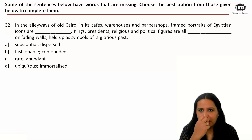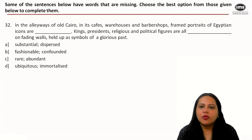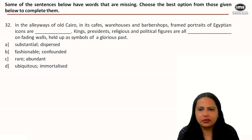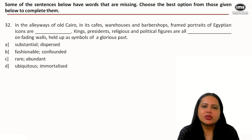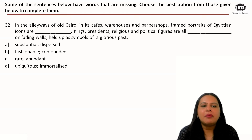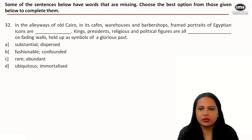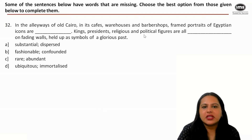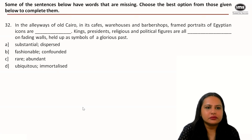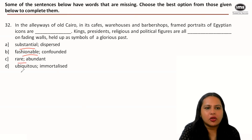Question four: 'In the alleyways of old Cairo, in its cafes, warehouses, and barbershops, framed portraits of Egyptian icons are dash — kings, presidents, religious and political figures are all painted on fading walls, held up as symbols of a glorious past.' If you have a glorious past, you want to show it off. Looking at options: substantial, fashionable, rare, or ubiquitous — we want something that conveys widespread presence.